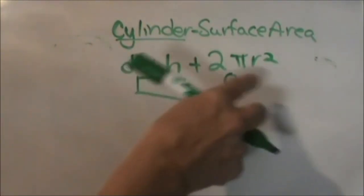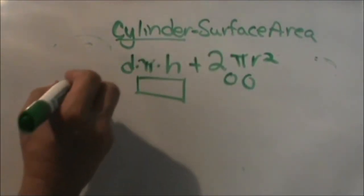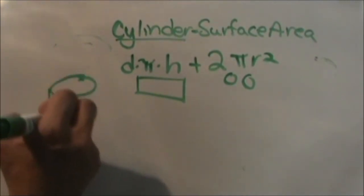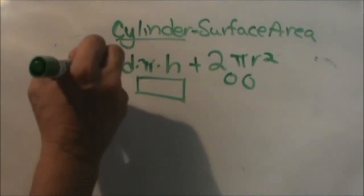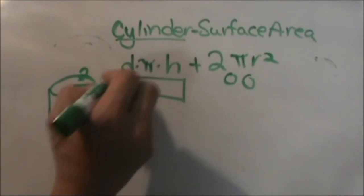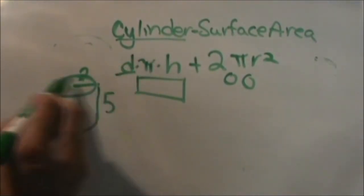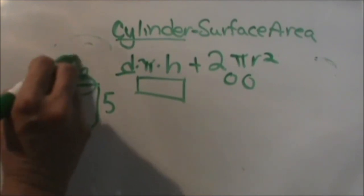So this is my rectangular side, and these are my two bases. So let's look at an example, say we have a cylinder, and the height is 5, and the radius is 2, so we're going to plug in the diameter, it would be 4, because if the radius is 2, the diameter is twice that.